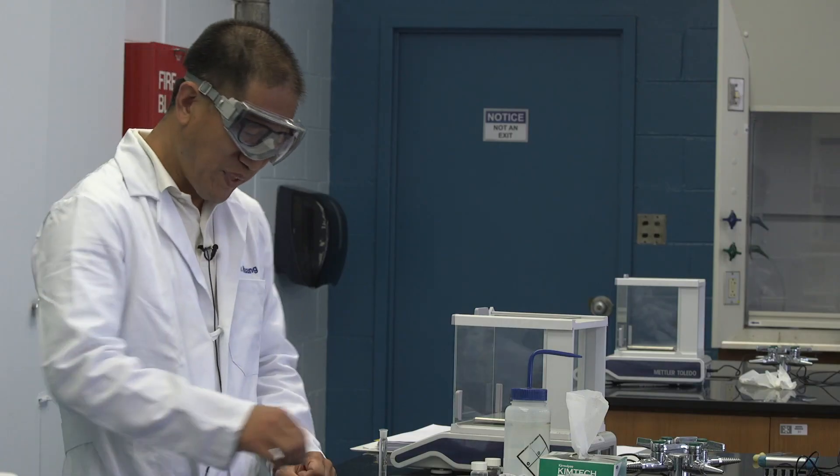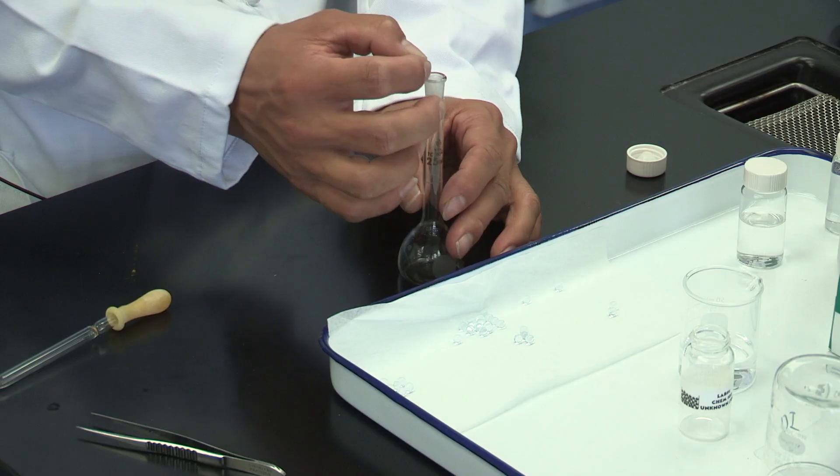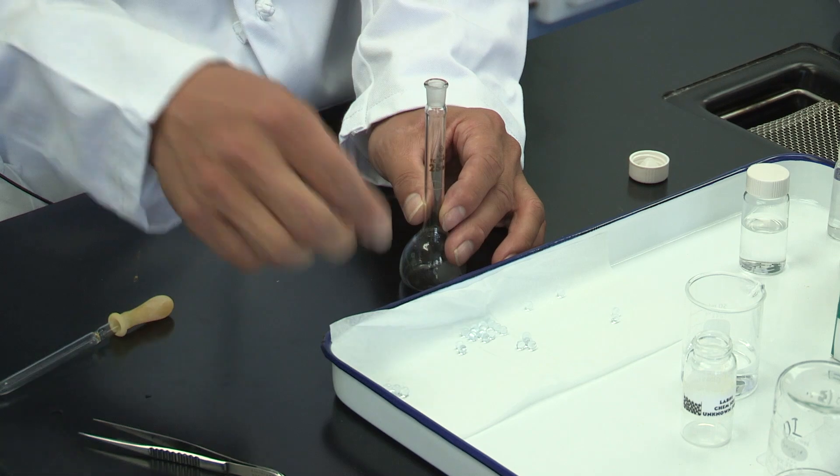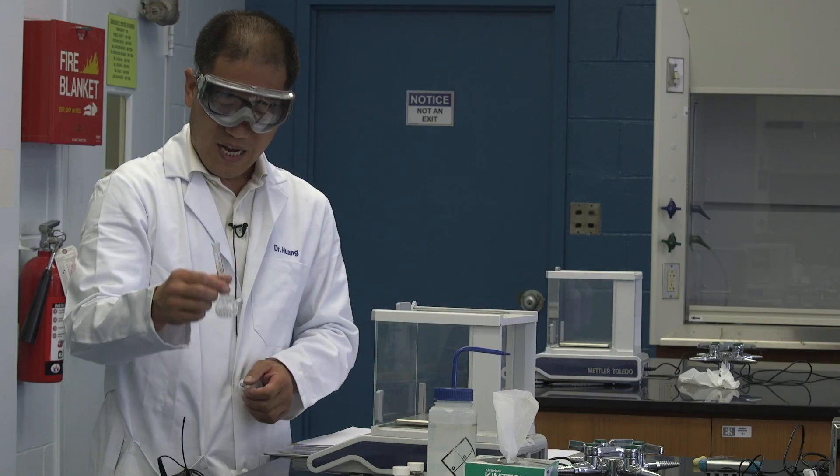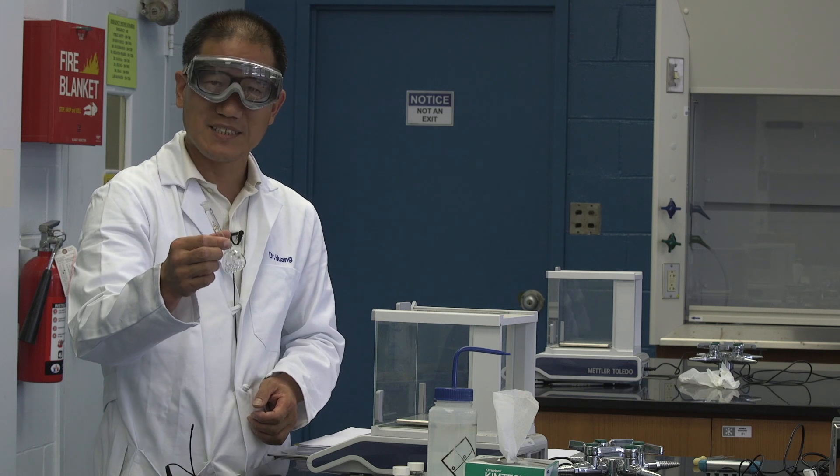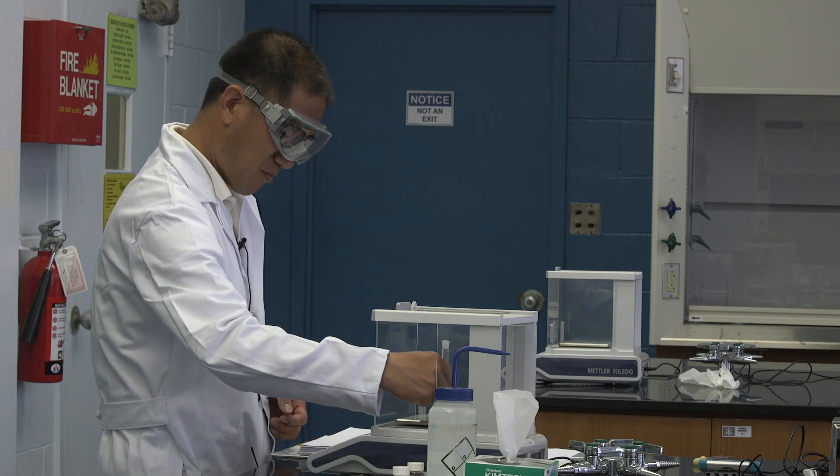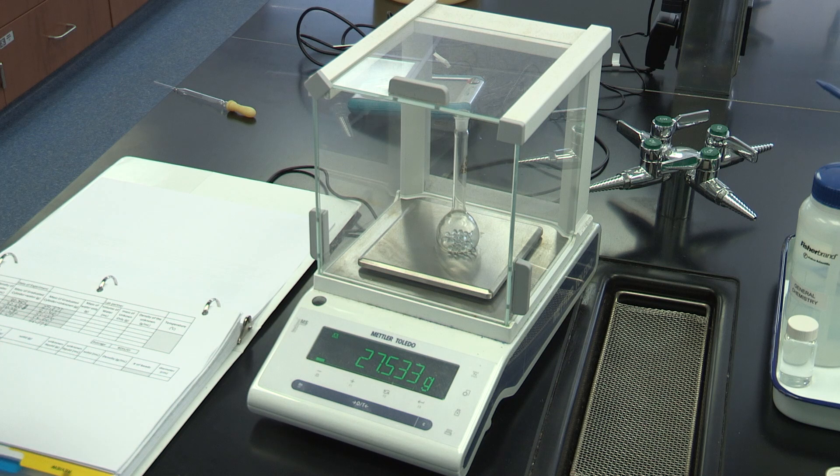Next, let's get the beads into the volumetric flask. One, two, three. I finally get 30 beads inside this flask. I'm going to get the total mass. Follow the instructions I just told you. The total mass is 27.533 grams.